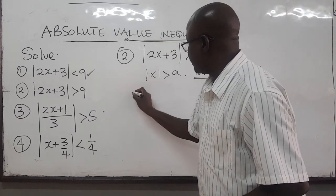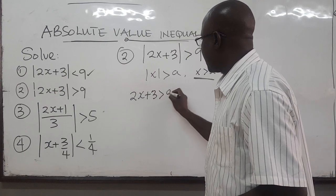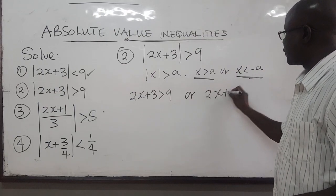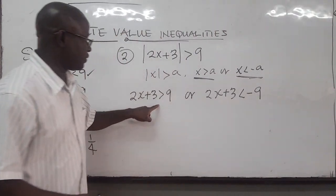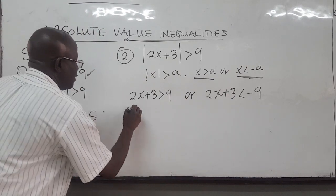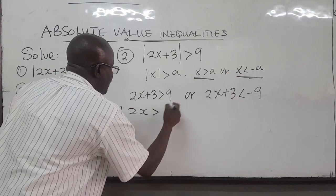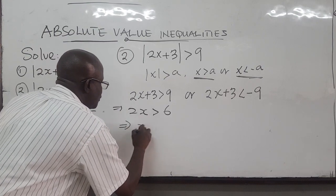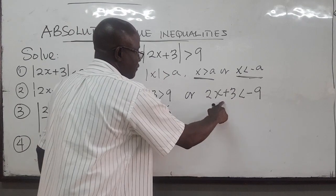So this means that 2x plus 3 is greater than 9, or 2x plus 3 is less than negative 9. We take them separately. From the first case, 2x is greater than 9 minus 3, which is 6. Dividing by 2, we get x is greater than 3.